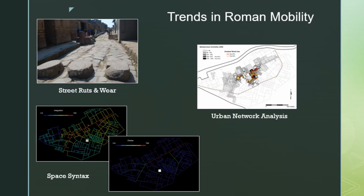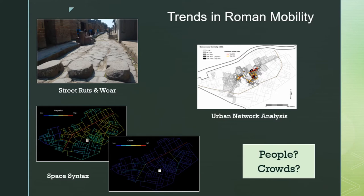Another analysis I've been working with is urban network analysis, which builds on space syntax by questioning how individual buildings structure different movement patterns. But the trend across all these analyses is that we leave out the people and the crowds that compose these movement dynamics — we transition back to looking at empty streets in the archaeological record and forget about the interactions that brought life to these urban contexts.